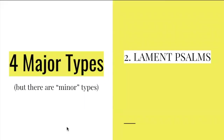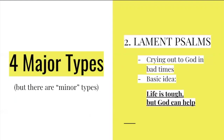Our second type of Psalm is called a lament Psalm. Lament is when you're really down, sad, or scared, and you're crying out about something. A lot of times when baby Ellie has to take a nap, she cries because mommy's going to leave her alone in her crib and she doesn't like it — she laments about going to sleep. Lament Psalms are about crying out to God in bad times, and the basic idea is: life is tough, but God can help.